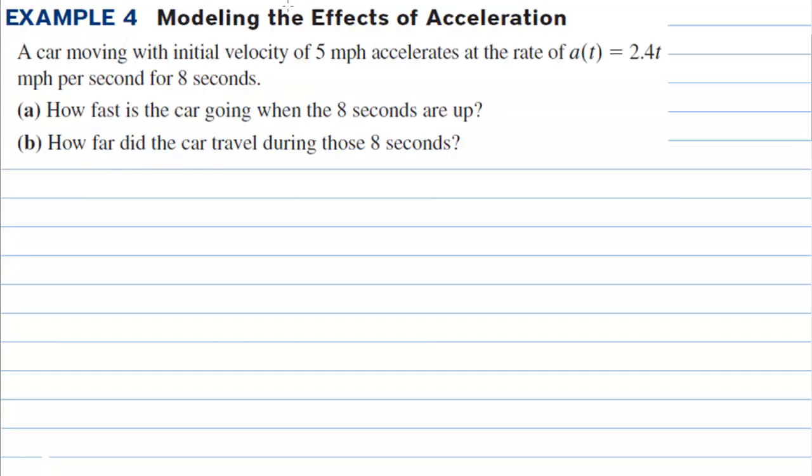Example 4 says, modeling the effects of acceleration. A car moving with initial velocity of 5 mph accelerates at the rate of a(t) = 2.4t mph per second for 8 seconds. How fast is the car going when the 8 seconds are up? Well, let's remind ourselves that v(0) = 5. We're going to have to use that later because it says the initial velocity is 5 miles per hour.